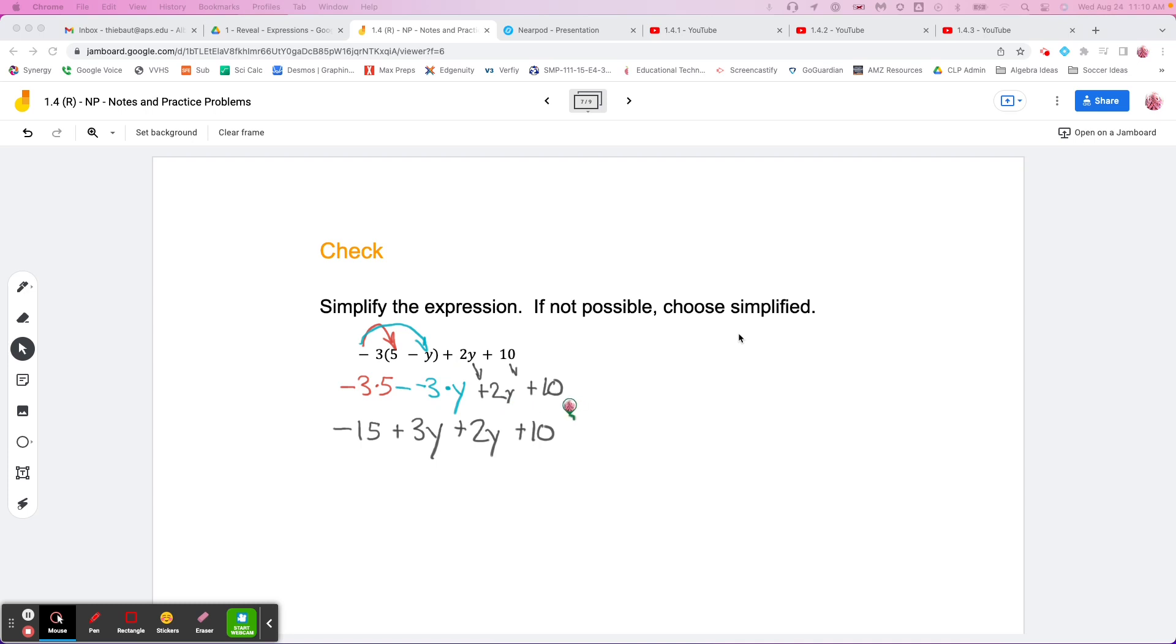How many terms do you see? Hopefully you tell me you see one, two, three, four terms, because terms are separated by addition and subtraction signs. So we've got four terms. Now which ones are alike?